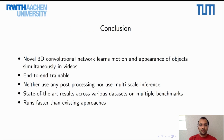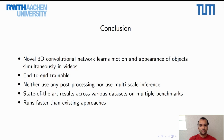To conclude, we've presented a new 3D convolutional network which processes motion and appearance simultaneously in videos. This network is end-to-end trainable and we do not use any post-processing or multi-scale inference. We've shown state-of-the-art results on multiple datasets across multiple benchmarks, and our network runs faster than existing methods. We hope this work encourages people to use 3D convolutional networks for video object segmentation, video instance segmentation, and similar tasks.